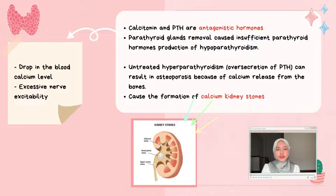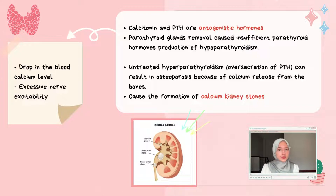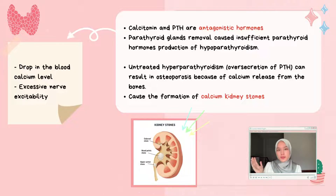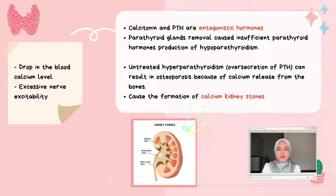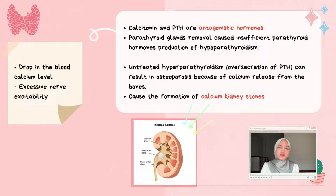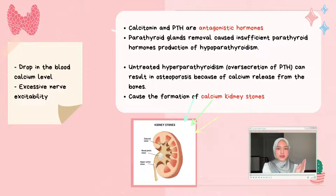Calcitonin and parathyroid hormone are antagonistic hormones — their actions are opposite to one another, and both work together to regulate blood calcium levels. Removal of the parathyroid glands causes insufficient parathyroid hormone, producing hypoparathyroidism, leading to a drop in blood calcium and excessive nerve excitability. Untreated hyperparathyroidism, involving excess parathyroid hormone, can result in osteoporosis due to calcium release from bones and can also cause the formation of calcium kidney stones.